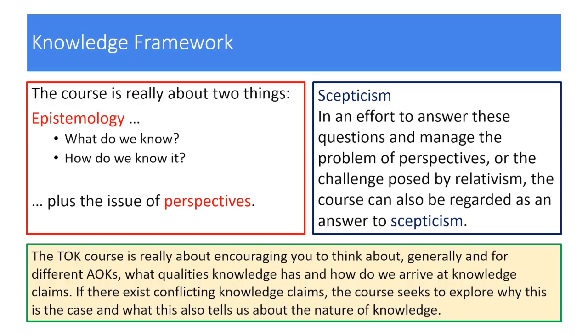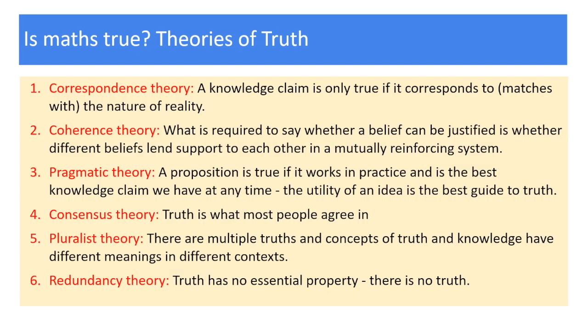For example, certainty is possible in the natural sciences, but this is of an inductive and contingent nature — that certainty being psychological, as a result of the quality of experimental data and theory used to explain that scientific knowledge claim. Drawing on the notion of the spiraling curriculum, the Knowledge Framework offers a vehicle to explore themes I return to often as I cover the units of the TOK course. These being the 12 TOK concepts, Skepticism and how to respond to this challenge, Absolutism versus Relativism, Perspectives, and the different theories of knowledge: Correspondence, Coherence, Pragmatic, Consensus, Pluralist and Redundancy. Arguably all of these theories of knowledge can be applied to mathematics.